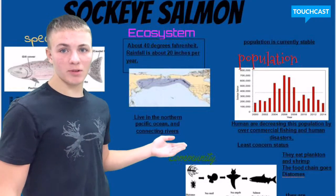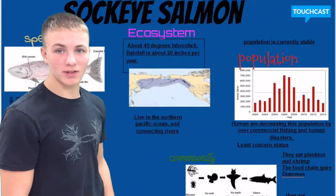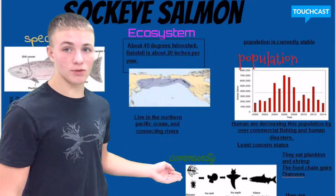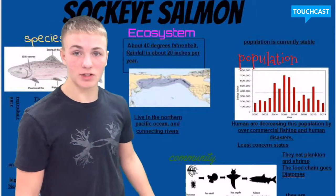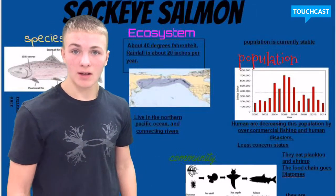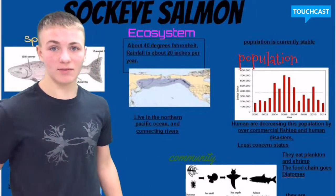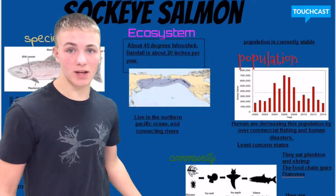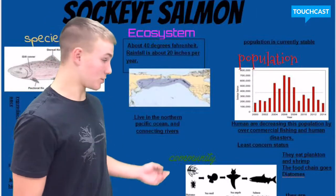The ecosystem is normally about 40 degrees Fahrenheit with an average rainfall of 20 inches per year. The sockeye salmon live in the northern Pacific Ocean and connecting rivers.